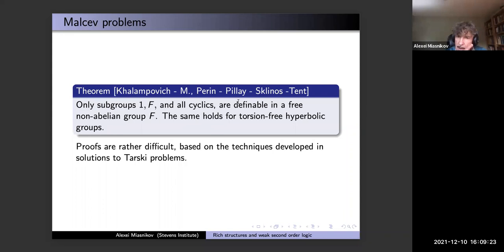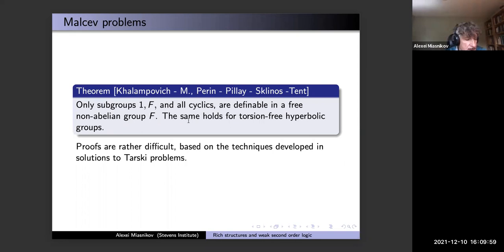This was proved with Olga, and independently by Perin–Sklinos and Tent, a bit later but independently. The proofs are rather difficult. Malcev asked whether the commutant is definable — we know that free groups of ranks two and three are elementarily equivalent, but that doesn't mean commutators are not definable, because there might be different formulas in different ranks defining the commutator subgroup.